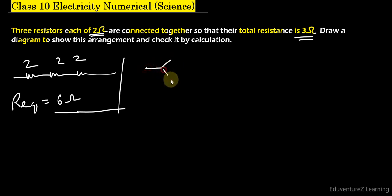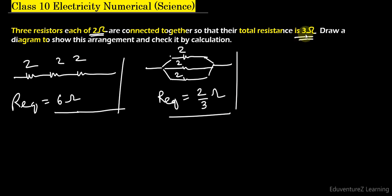If we connect all of them in parallel - 2 ohm, 2 ohm, 2 ohm - then we will get the equivalent resistance of 2 upon 3 ohms. This is not required. We have to get a total resistance of 3 ohms.